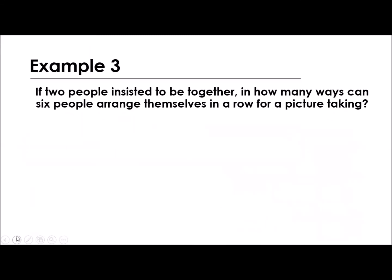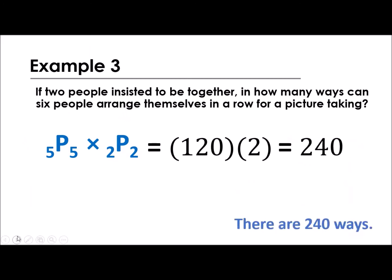So let's use now our calculators. The permutation of 5 taken by 5, actually you can directly input this in the calculator. Some of the calculators will require you to use the parentheses. Permutation of 5 taken by 5 is equal to 120. And permutation of 2 taken by 2, that is equal to 2. So the value now is 240. So there are 240 ways if two people insisted to be together for that picture taking in a row.